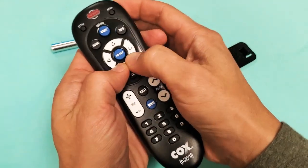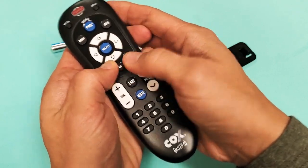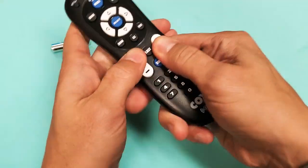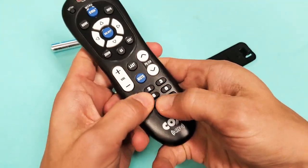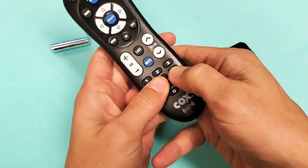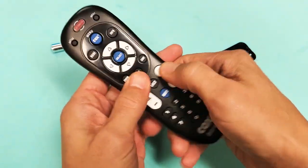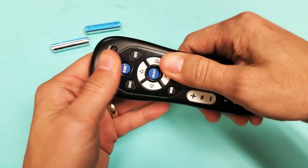Because typically what happens is if you get water or hand sweat, lotion, coffee, or soda stuck in one of these buttons, it can cause all kinds of issues on the entire remote.